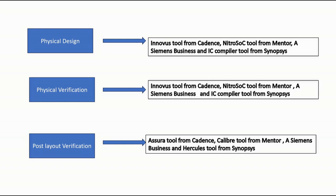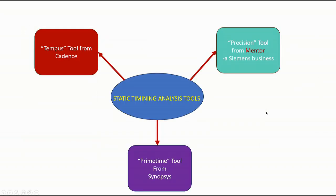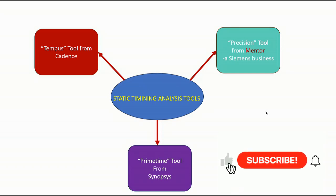For performing static timing analysis, I have noted the tools which I will be showing in the next slide. For running static timing analysis, Tempus from Cadence, Precision from Mentor, and PrimeTime from Synopsys can be used. These are the tool lists I have shown — hope you like the video, please subscribe and share my channel.